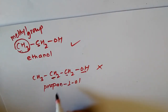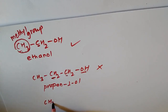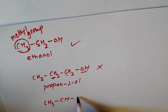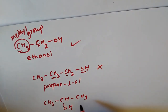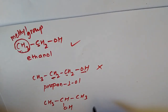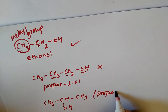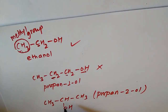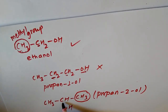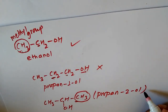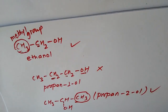The positional isomer of propanol is CH3-CH(OH)-CH3, which is isopropyl alcohol or propan-2-ol. Here the OH-bonded carbon contains a CH3 group, so propan-2-ol gives the Iodoform test.